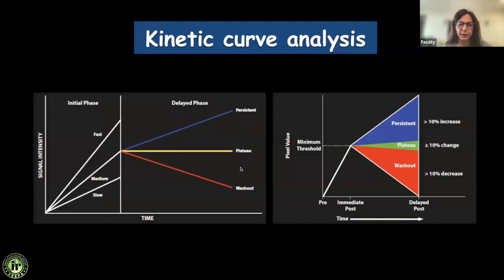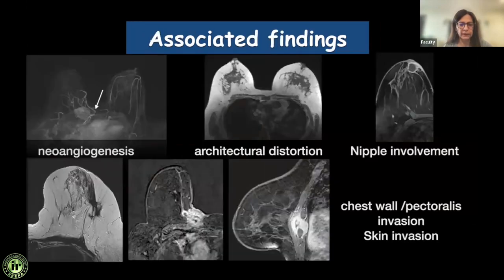The delayed phase is divided into persistent, plateau, and washout. Persistent is normally seen in benign conditions, but malignancies like invasive lobular carcinoma and DCIS can also show a persistent curve. Plateau and washout are seen in malignant conditions, though plateau can also occur in benign lesions. Always remember: morphology trumps kinetics. Also look for associated findings like neoangiogenesis, architectural distortion — which can be the only pointer towards invasive lobular carcinoma — and nipple involvement.